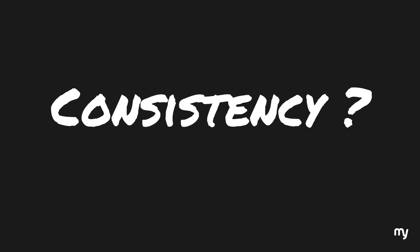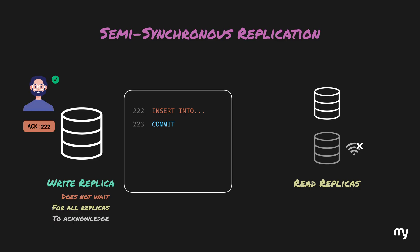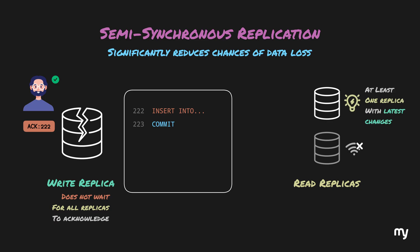In cases where speed is critical but absolute consistency isn't always necessary, the slower write times of synchronous replication can become an issue. The answer is semi-synchronous replication. In semi-synchronous replication, the primary does not wait for all replicas to acknowledge. Instead, if there are two replicas and one is unresponsive while the other returns an acknowledgement, the primary marks the transaction as successfully completed. This approach significantly reduces the chances of data loss compared to asynchronous replication, and it is much faster than synchronous replication since the primary doesn't wait for all replicas.